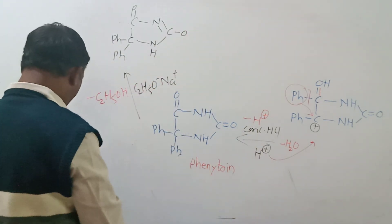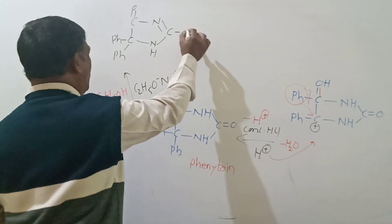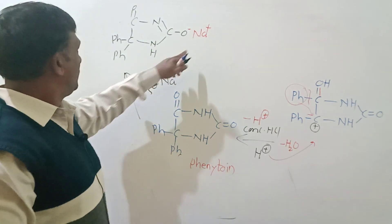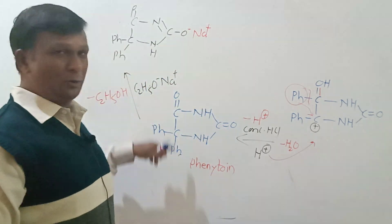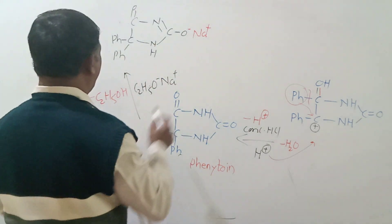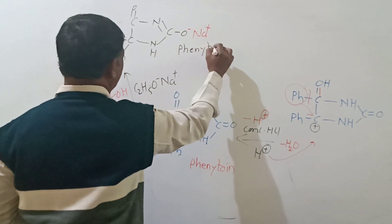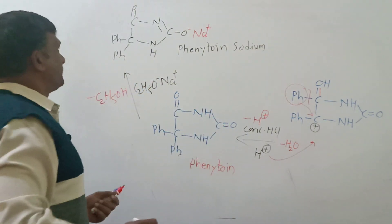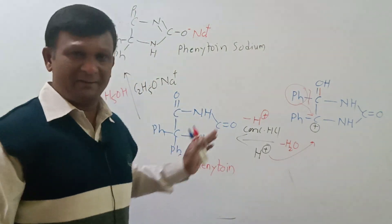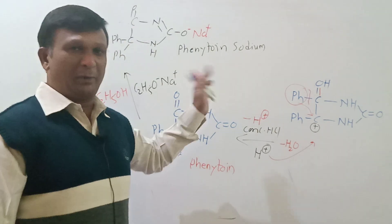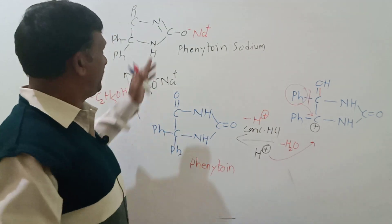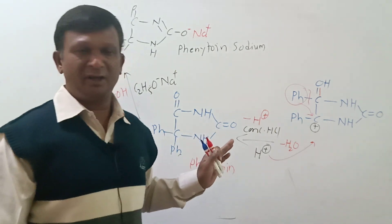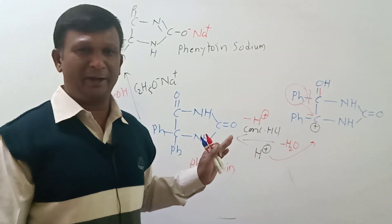This sodium ion then will migrate over to the oxygen to give us the corresponding sodium salt of phenytoin, which is called phenytoin sodium. Dear friends, that is all about the preparation of phenytoin and its conversion to phenytoin sodium. Thanks for watching the video. Please like it, share it, and please don't forget to subscribe. Thank you.